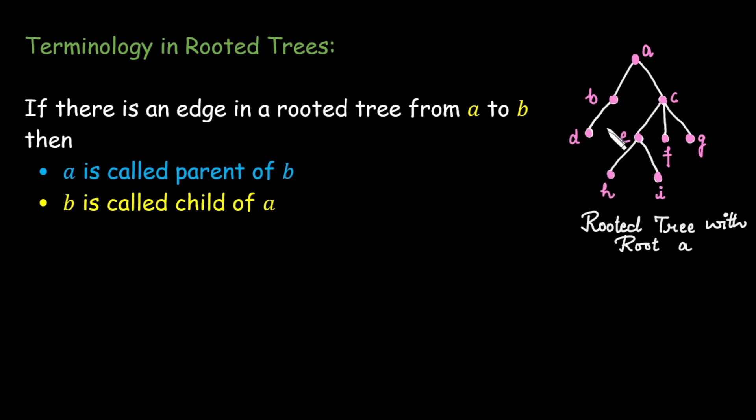Another case we can take here, consider the vertex h. h is connected to vertex e. So we call h a child of e and e is a parent of h.